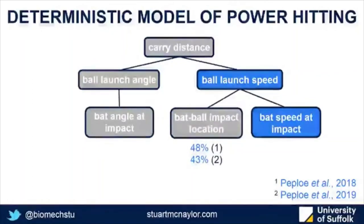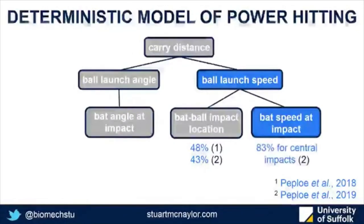It might be quite self-explanatory, but the most important factor is bat speed at impact — the faster you swing the bat, the faster the ball is going to go. 83% of the remaining variation for those central impacts can be explained by bat speed.